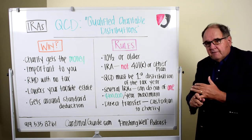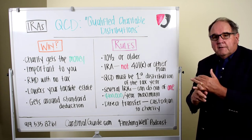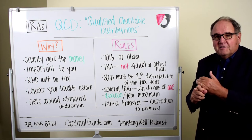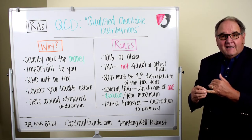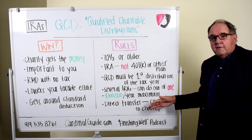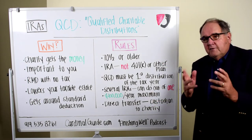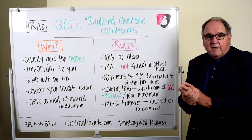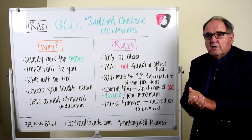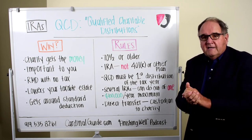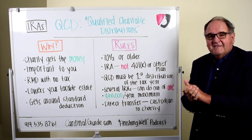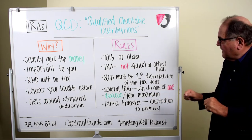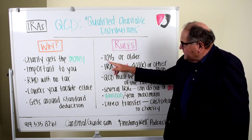The rules are very specific. If you mess one of these things up, it's going to be deemed a regular distribution — not a QCD — and you're going to end up paying taxes on the money. I'm not going over these for you to memorize them; I know these rules and I do QCDs for a lot of my clients. We do it in the beginning of the year, decide how much it's going to be, look at the effect on their taxes and the size of their IRA, and then I handle all the paperwork — which is electronic now.